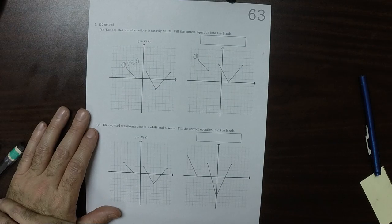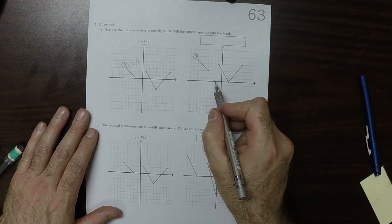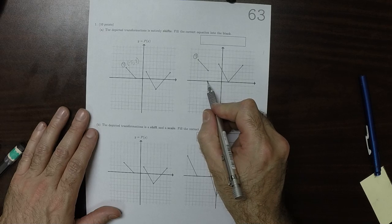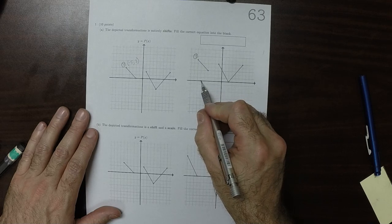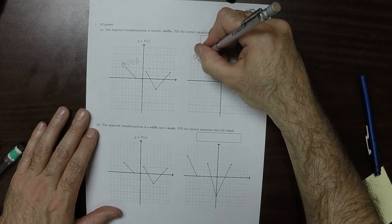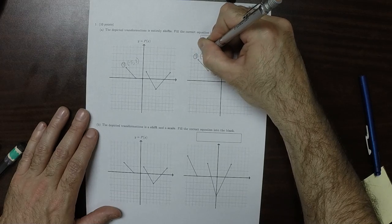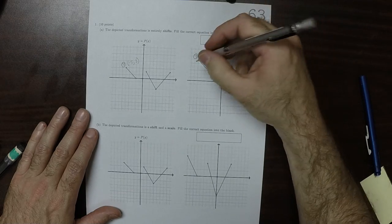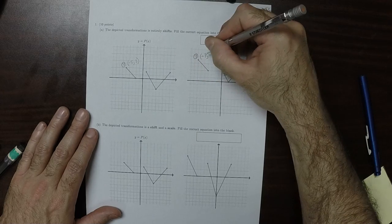Whereas the transformed point is at negative 7, and then 6.